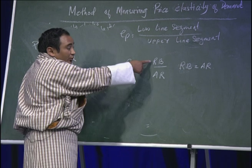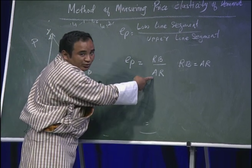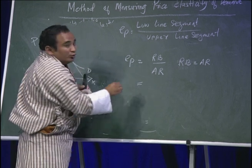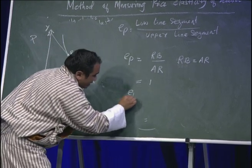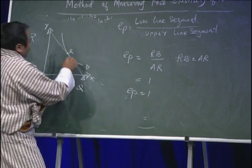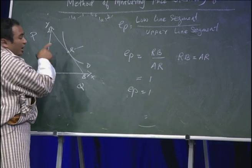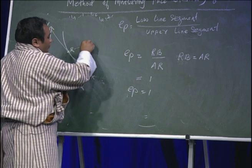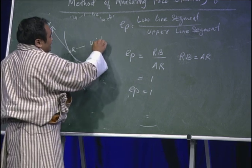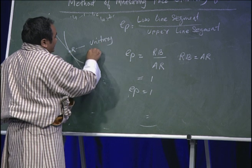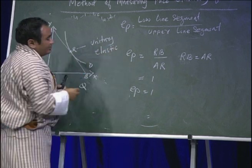When the numerator is equivalent to the denominator, you get EP equal to 1. When EP equals 1, we conclude that at point R, the type of elasticity is unitary elastic demand.